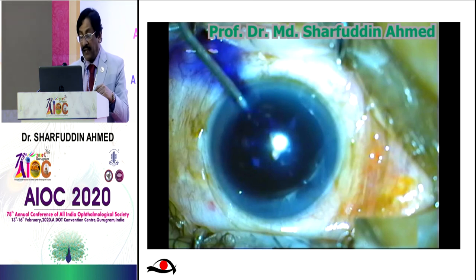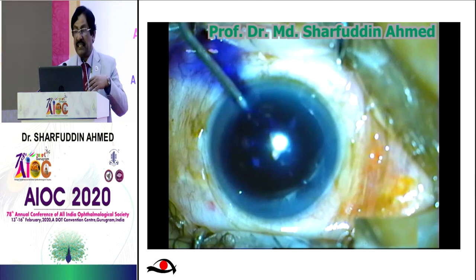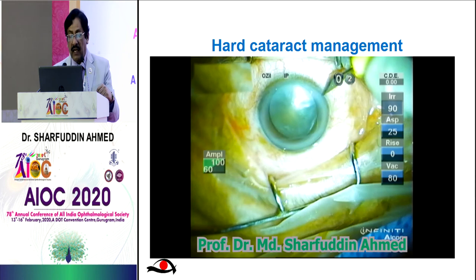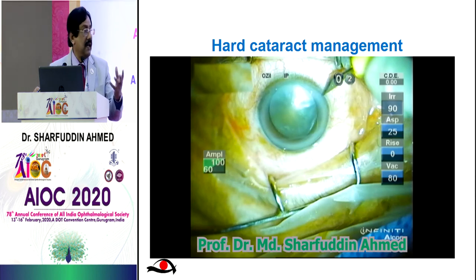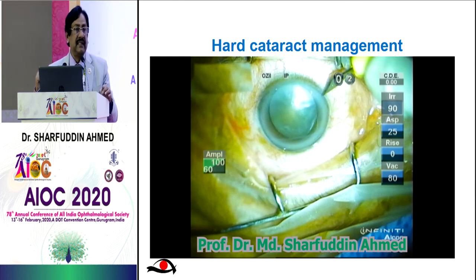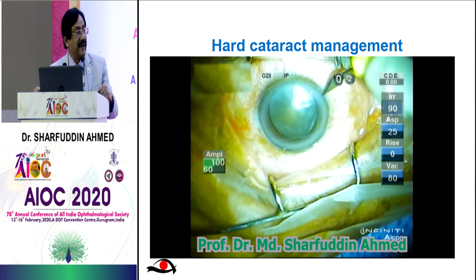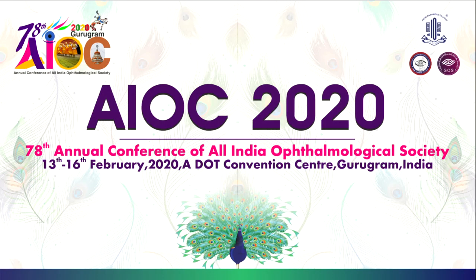Many hard cataracts have been managed, including the dislocated lens where a CTR ring is given. If there is a fall of the nucleus into the vitreous, surgeons should consult a vitreoretinal surgeon and all the setup should be in place. Hard cataract management requires a quick and swift surgeon who knows how to manage complications when they arise. Thank you very much for your patient hearing.